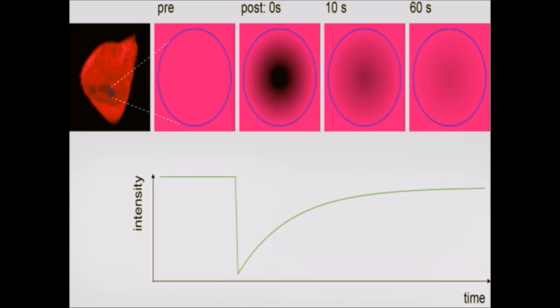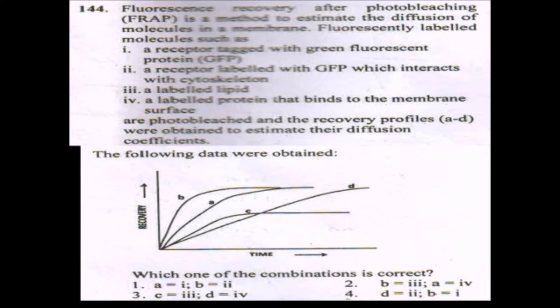In FRAP analysis, we need to analyze two main domains in the graph. First is the time period required to recover the fluorescence light, and second is the mobile fraction and immobile fraction. By comparing these two from the graph, we can easily analyze it. Let's start with the first point: a receptor tagged with a green fluorescent protein. This receptor is tagged with GFP. If it's lipids, it's usually a freely moving compound in the membrane. But if it's a receptor, it has a definite weight, so it will travel slowly and migrate through the membrane, taking more time for fluorescence recovery.